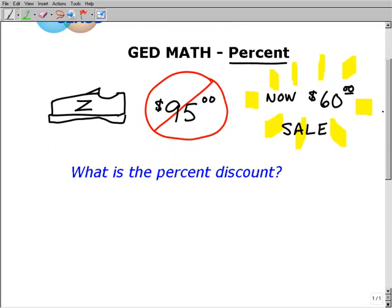So let me just go ahead and tell you what the problem is. Alright, so let's say I have these cool pair of sneakers and let's call them Zimmerman sneakers and their original price - they originally go for ninety five bucks. But they're on sale for 60 bucks. So what I want to know is what is the percent discount?